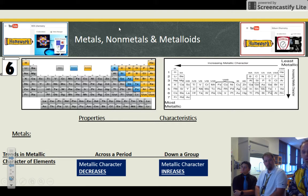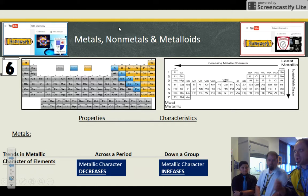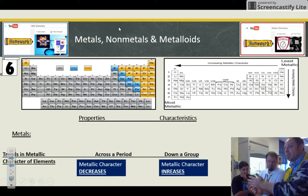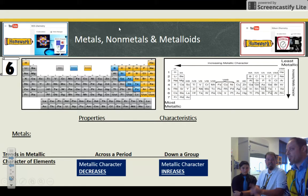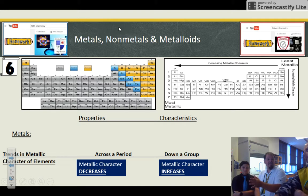There's some trends in metallic character. As you move left to right sequentially from lithium to beryllium to boron, carbon, nitrogen, oxygen, fluorine, the metallic character decreases. Each step you take to the right, the next successive element is less and less metallic. Because metals want to lose electrons, and as I add electrons, eventually they don't want to lose them anymore. They want to start gaining them.